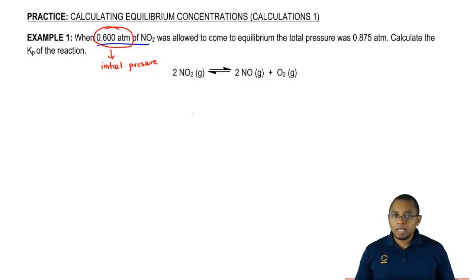All we say to ourselves is do we have to use an ICE chart? The answer here is yes because we're going to have this missing an equilibrium amount, this is missing an equilibrium amount, and this is missing an equilibrium amount. Any time more than one of my compounds in my balanced equation is missing an equilibrium amount, I have to do an ICE chart.